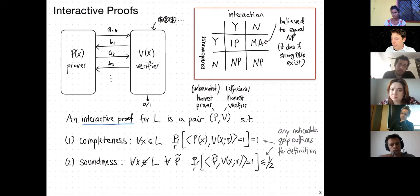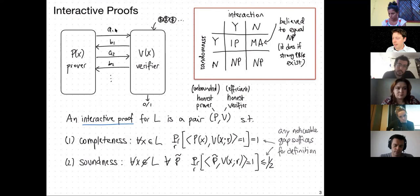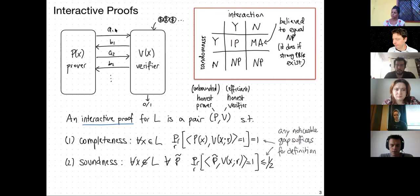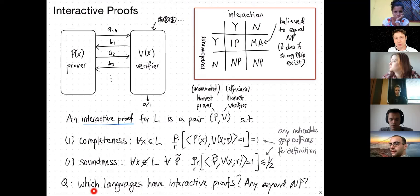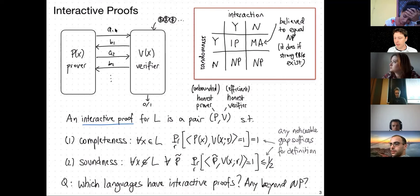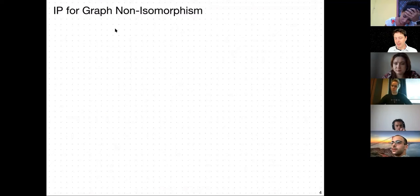There is a setting with randomness but no interaction, known as the class MA, which under de-randomization assumptions is believed to equal NP anyway. There is something special about interaction and randomness together that creates the interesting class IP. Now which languages have interactive proofs beyond NP? NP is just a special case, so we get that for free. We'll give one of the simplest and most beautiful examples of an interactive proof: the problem of graph non-isomorphism.